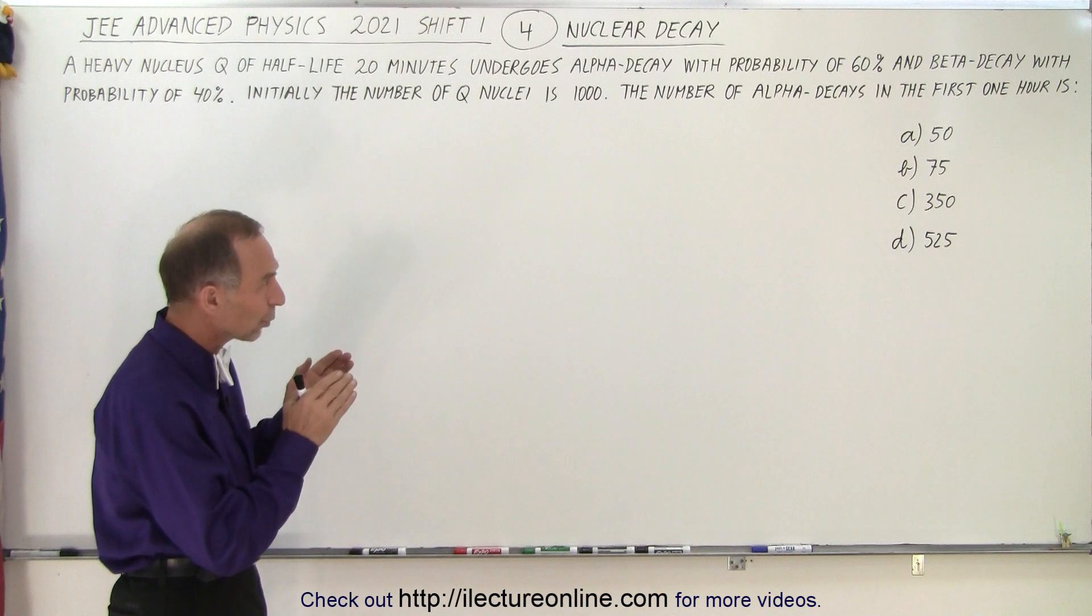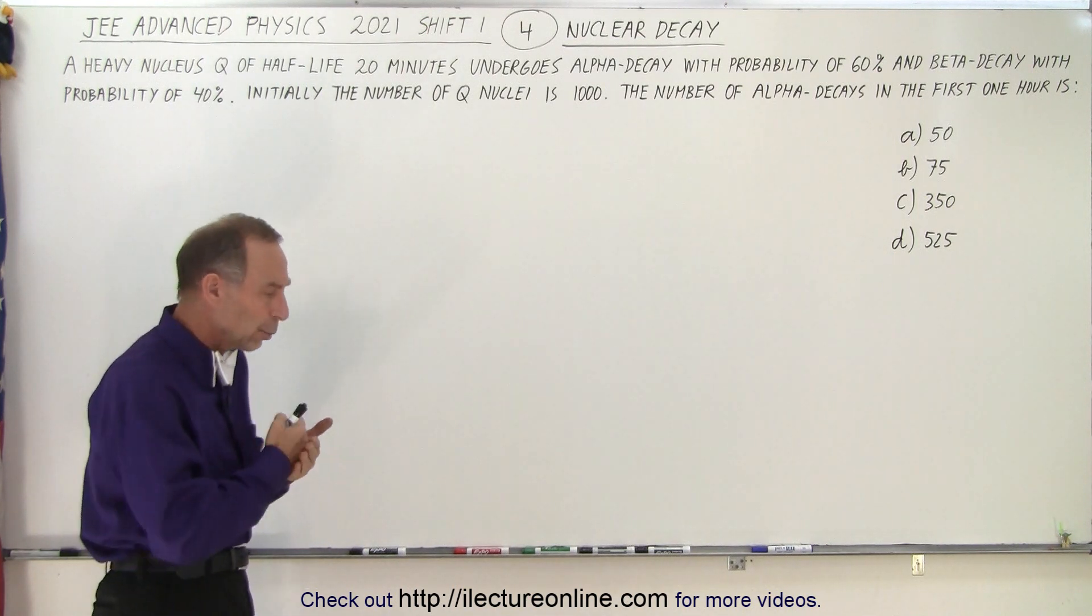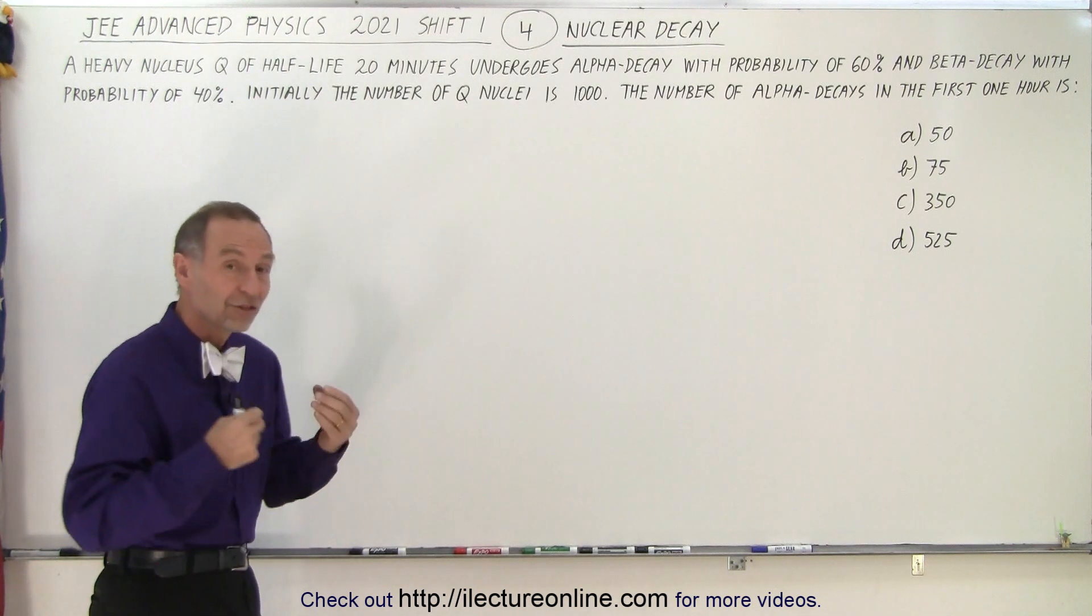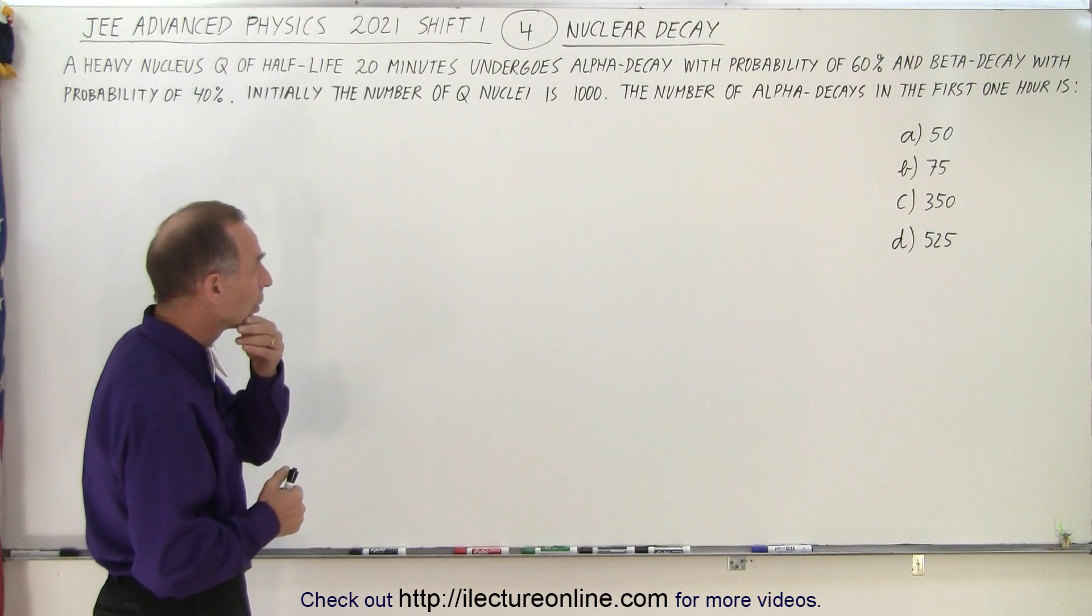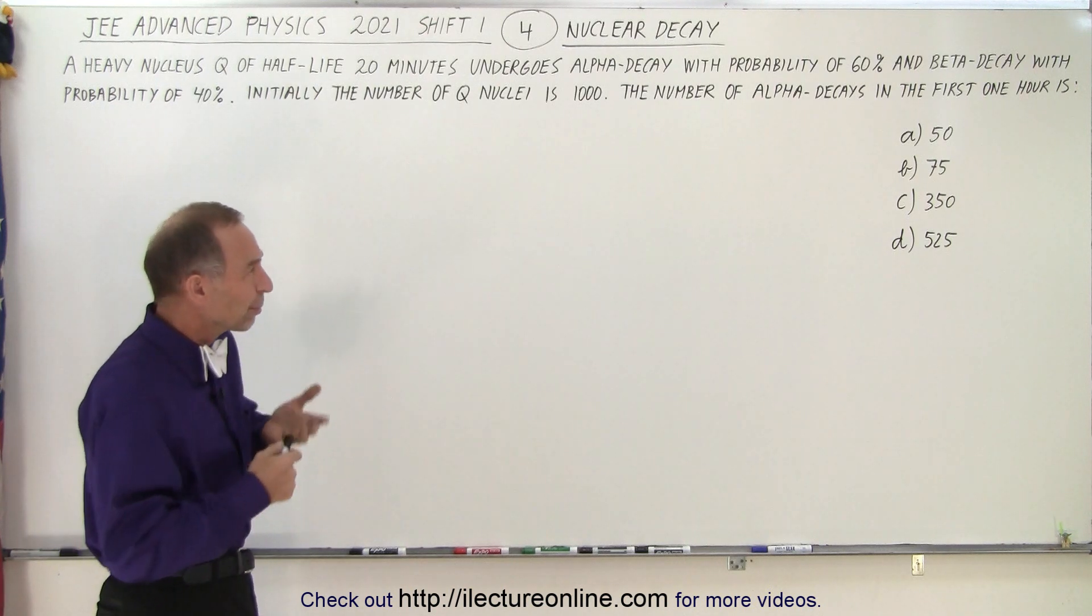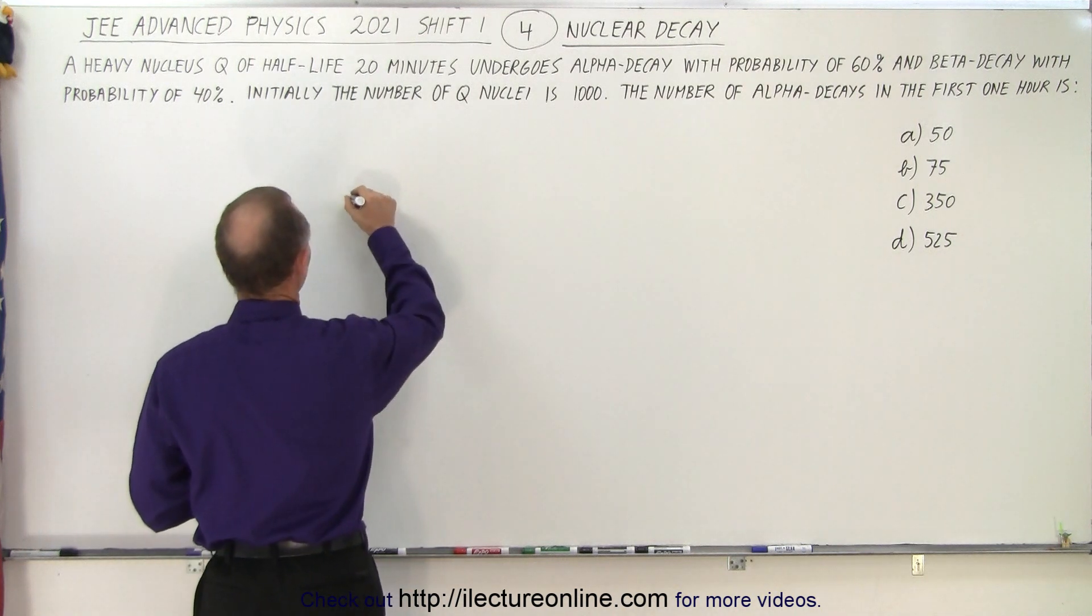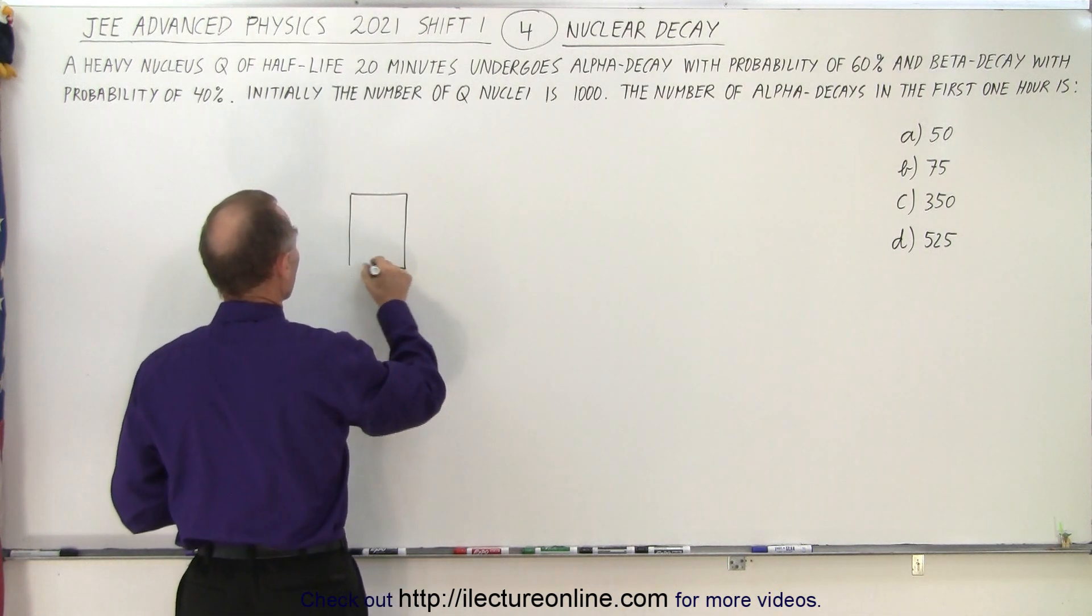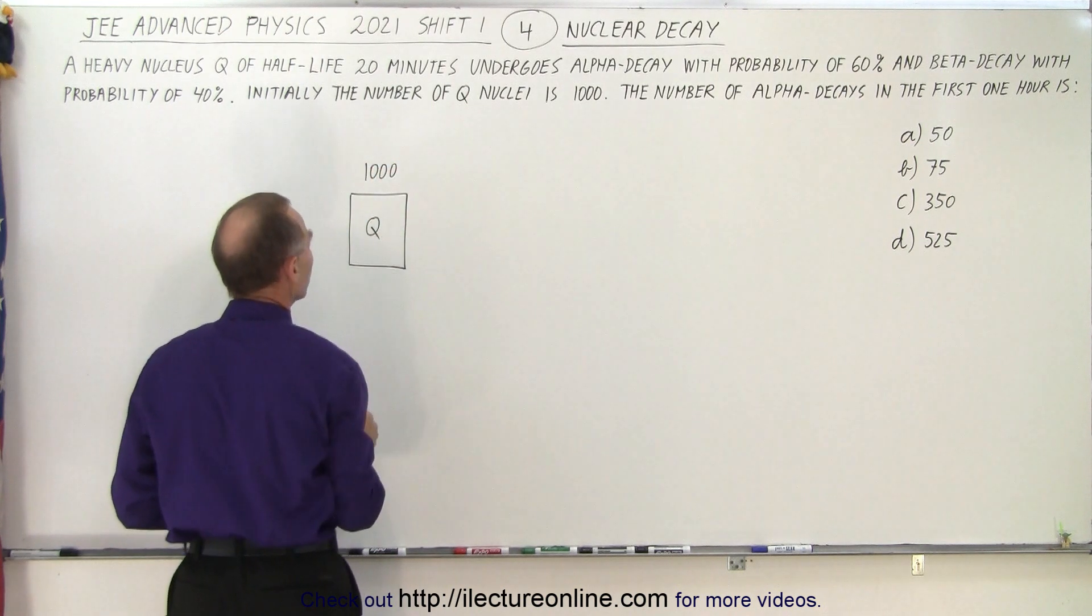Right away I look at that question and I read that the half-time is 20 minutes and they want to know what happens after one hour, which is three half-lives. The best way to do this problem is probably through drawing some diagrams. So let's say we start with 1000 nuclei. We have 1000 nuclei in column Q.